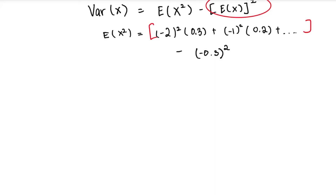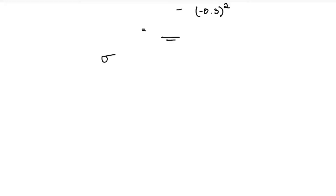That gives you your variance of x. The formula is simply E(x²) minus [E(x)]². If the question asks for sigma, the standard deviation, you just take the square root of your variance of x, and give your answer to three significant figures. That's how you find sigma.